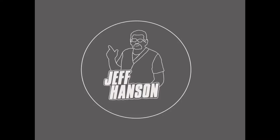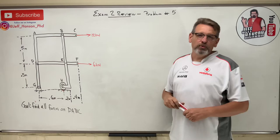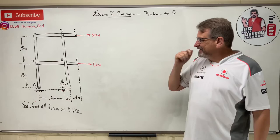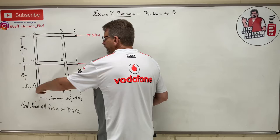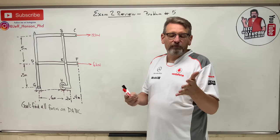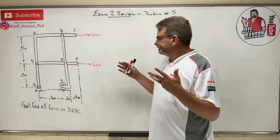All right, we're back talking about exam two review, on the last problem, problem number five. It looks like we've got a frame problem. The goal is to find all the forces acting on member DABC — there's a dog-leg shape here and another member. The first thing you should do in a frame problem is look for two-force members. A two-force member is pin-connected at both ends with no forces in the middle — I don't have one here.